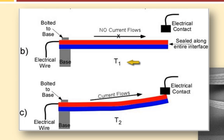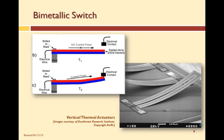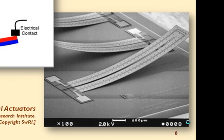At temperature T1, the metals of the switch are the same length and the switch is open. As the temperature increases, the metal starts to bend. At temperature T2, the switch makes contact with the electrical contact and current flows through the switch. If the switch controls an air conditioner, the air conditioner will come on at the higher temperature of T2. The thermal switches in the scanning electron microscope image on the right were developed by engineers at the Southwest Research Institute. These micro-sized vertical thermal actuators operate by a differential expansion between two layers of dissimilar materials in each arm of the switch. To attain the initial upward curvature seen in the picture, the engineers took advantage of residual stresses in the film layers used to build the switch.